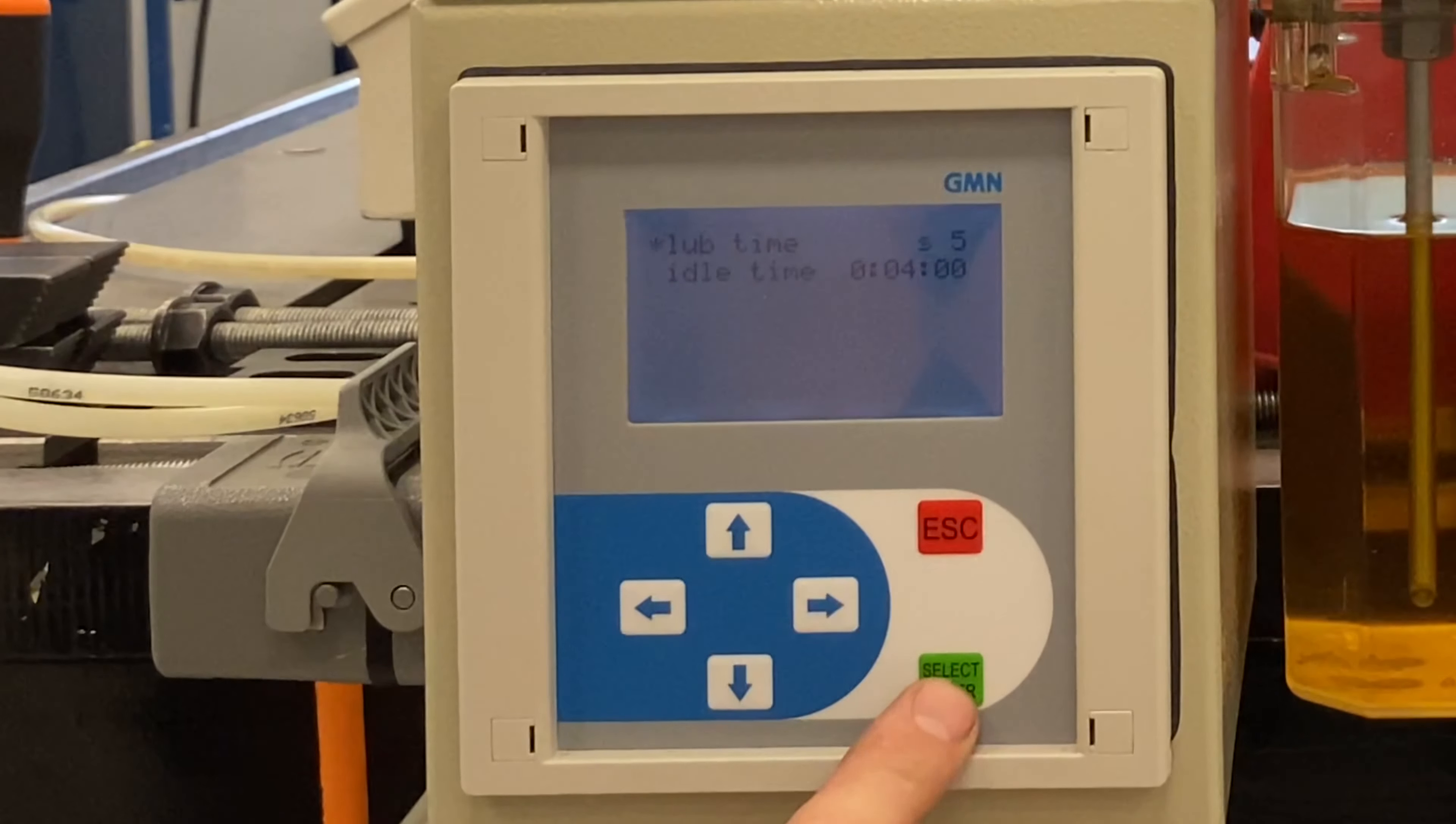Enter normal mode and adjust the idle time according to what the spindle's owner's manual says. For example, a 30,000 RPM spindle needs an idle time of 3 minutes.